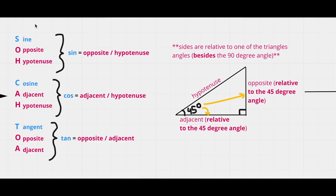To reiterate: we have three primary trig ratios — sine, cosine, and tangent. Sine is opposite divided by hypotenuse. Cosine is adjacent divided by hypotenuse. And tangent is opposite divided by adjacent.